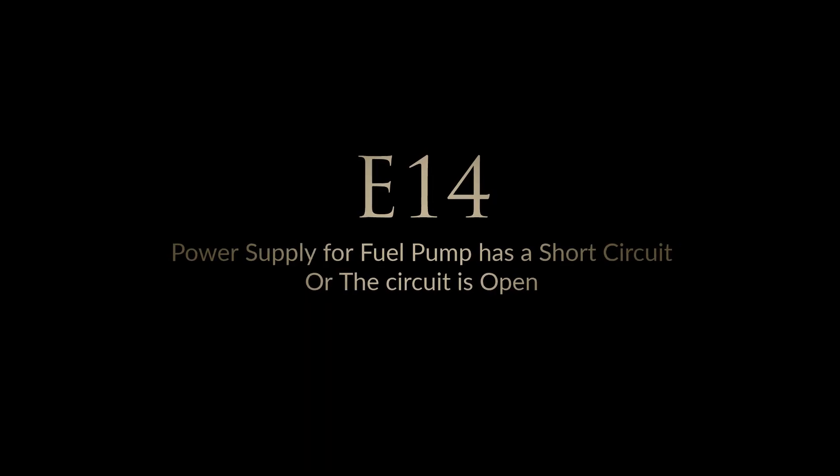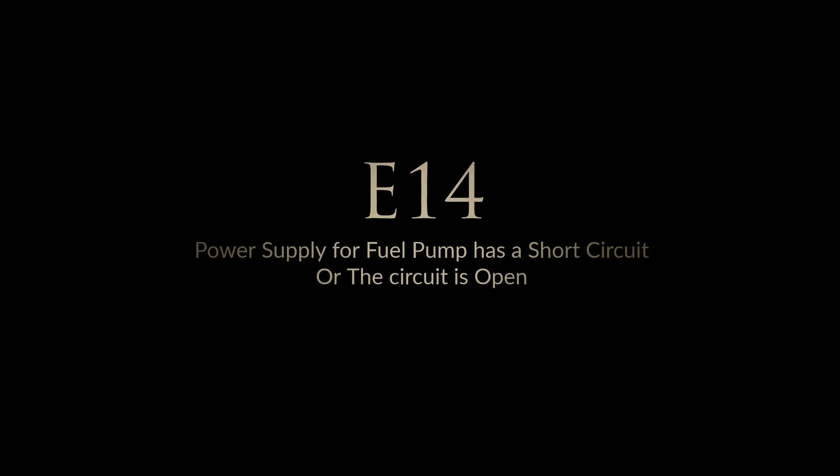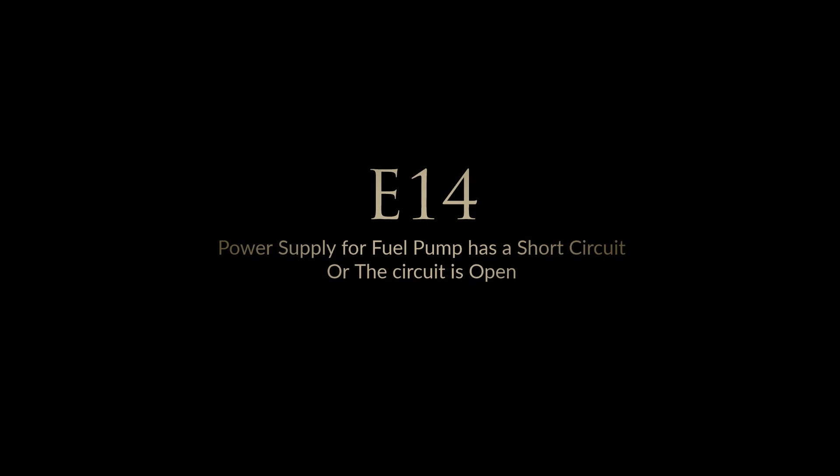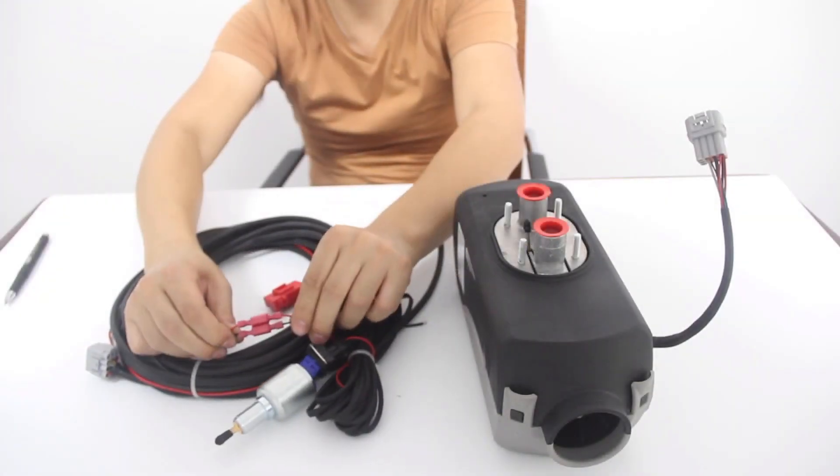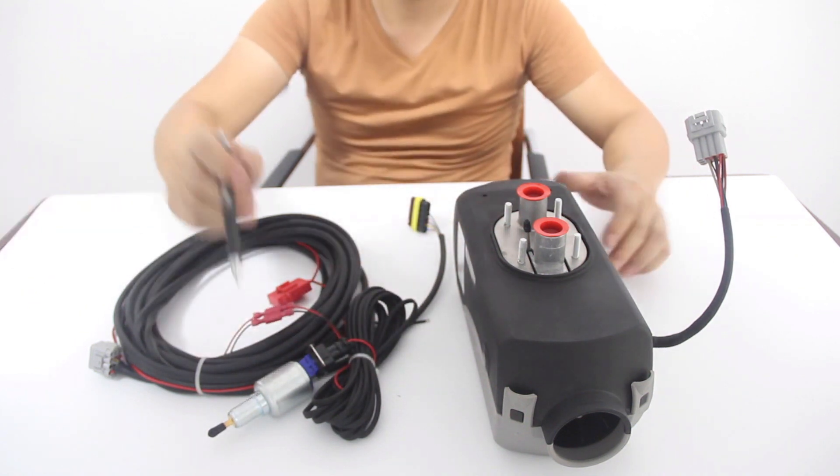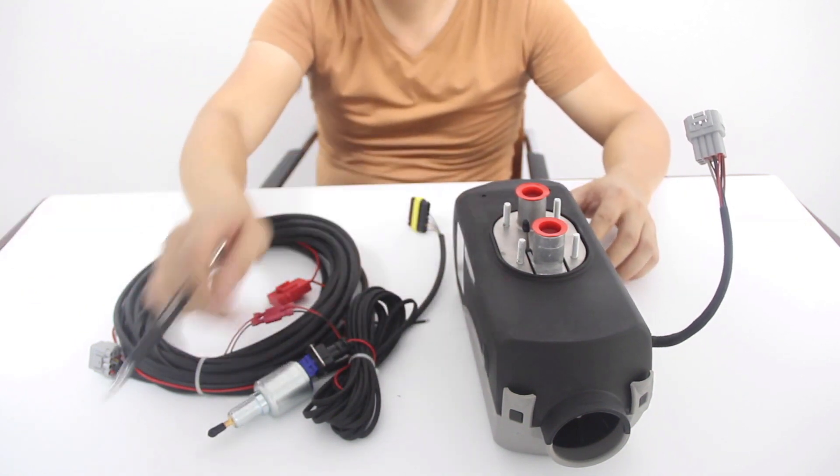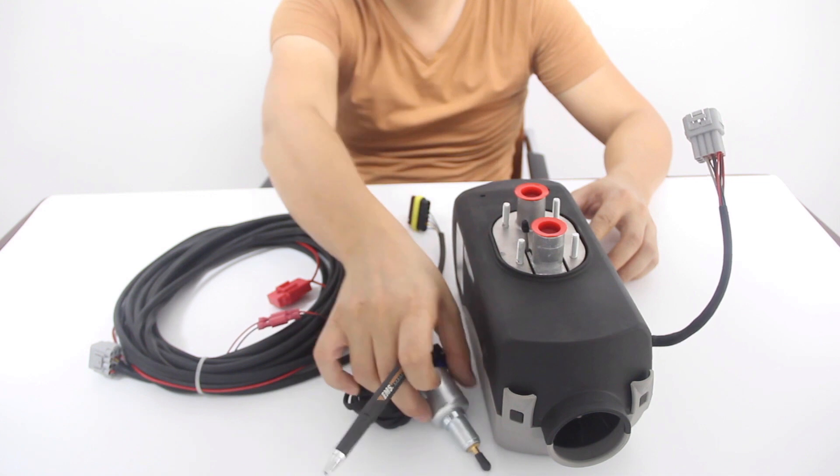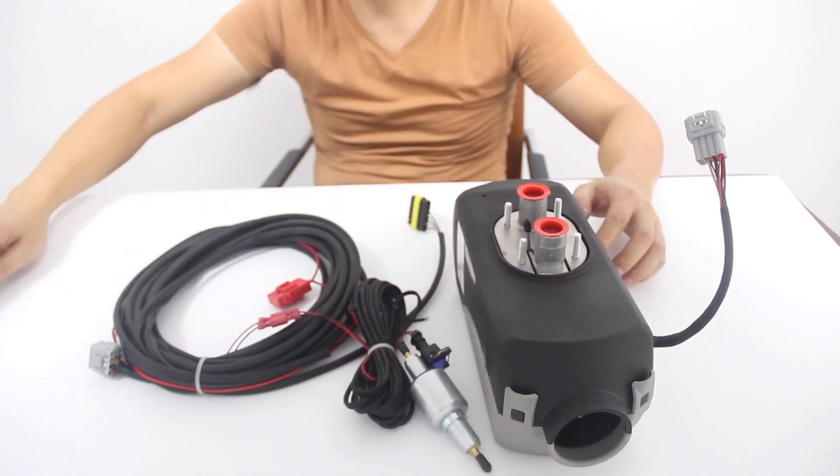Error code 14, power supply for fuel pump has a short circuit or the circuit is open. To address error 14, ensure that the fuel pump connections are clean and snug, allowing them to establish a secure and effective connection. Verify that the voltage of your fuel pump aligns with the unit's specified voltage for the pump output.